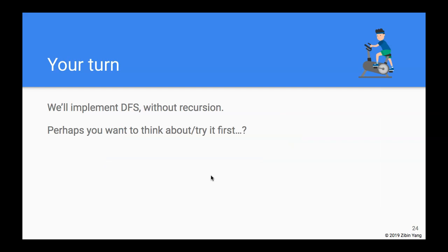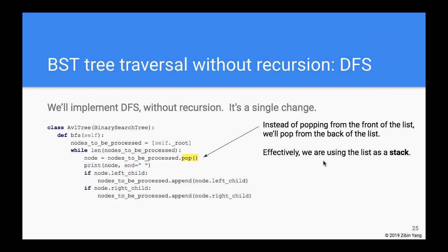The next question is how do we do a depth first search without recursion. Given that you now know how to do a breadth first search, think about how you'd change it — and the hint is it's a very tiny change. As it turns out, the only change is that instead of using the list as a queue, we use it as a stack. We still insert at the end, but now we pop from the end as well — that's using it as a stack.